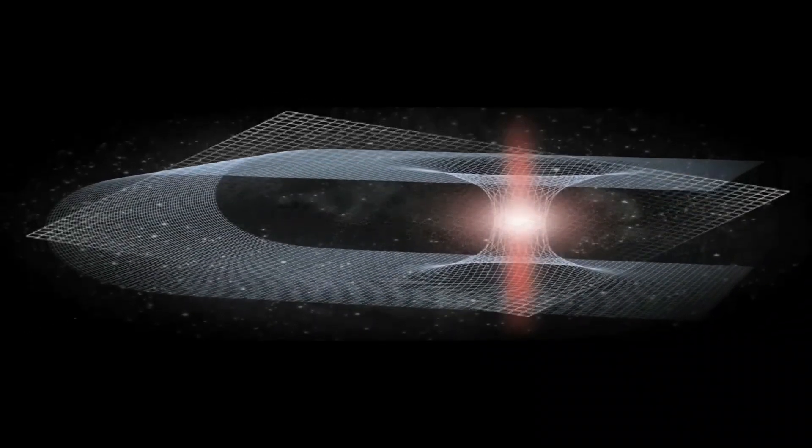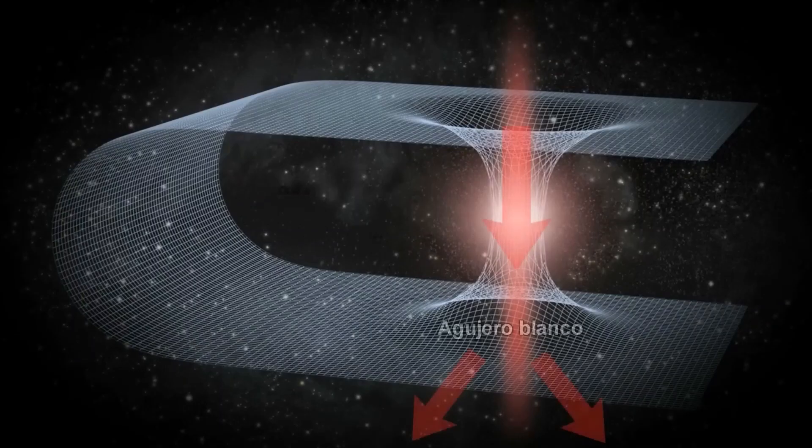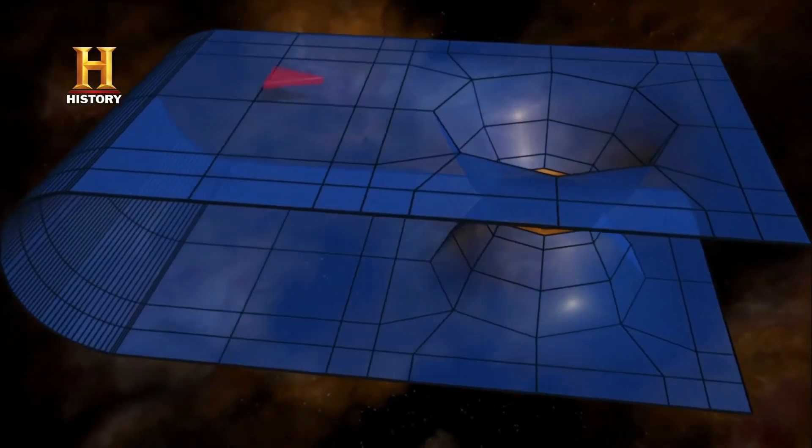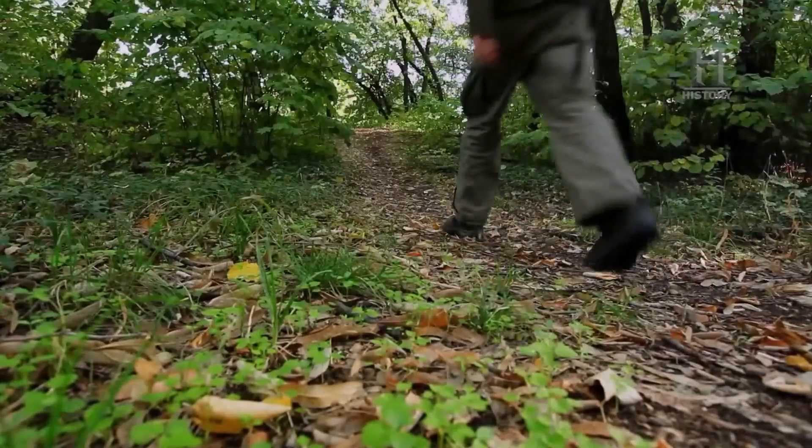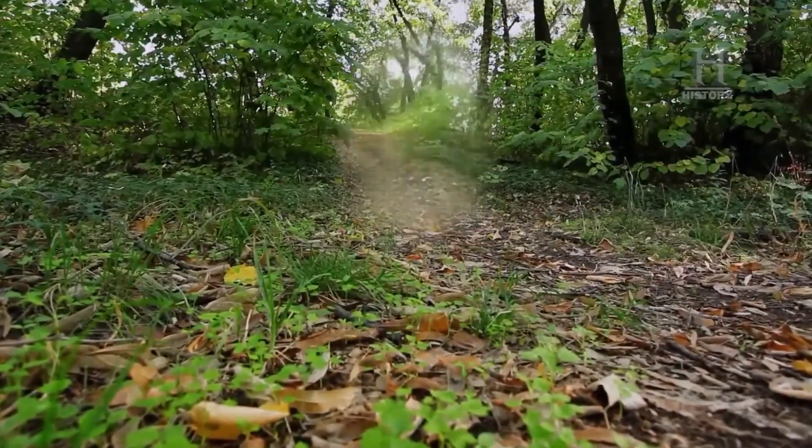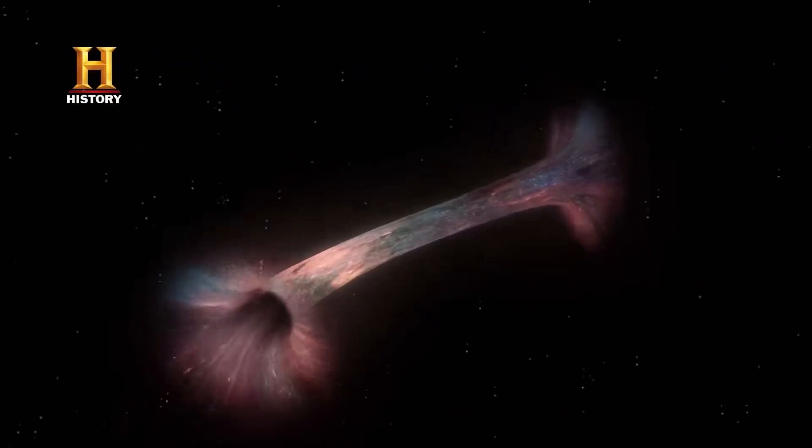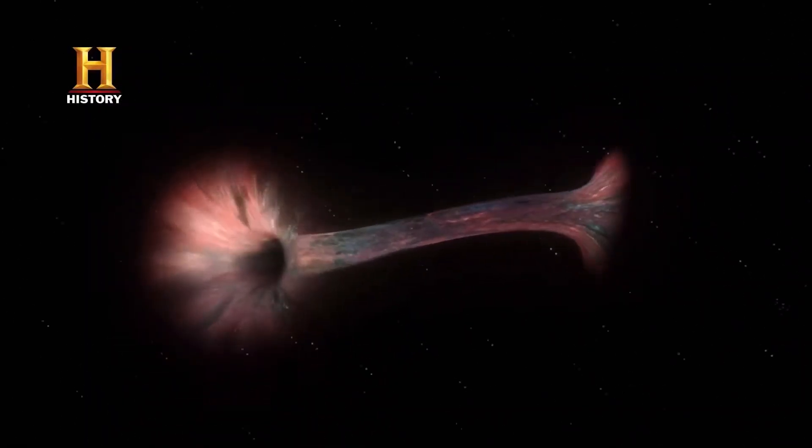Wormholes would arise from the curvature of spacetime, according to the equations of general relativity. These holes would be like bridges in the fourth dimension, connecting points in three-dimensional space. Although from our perspective it would seem like an instantaneous jump in spacetime, it would not exceed the speed of light.